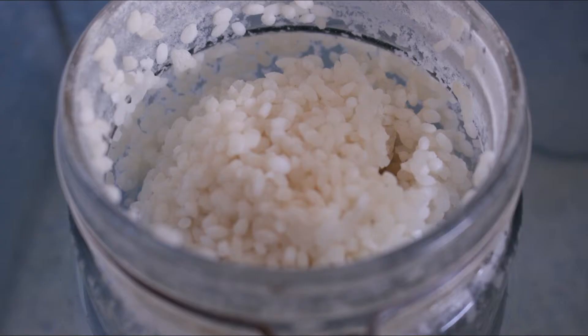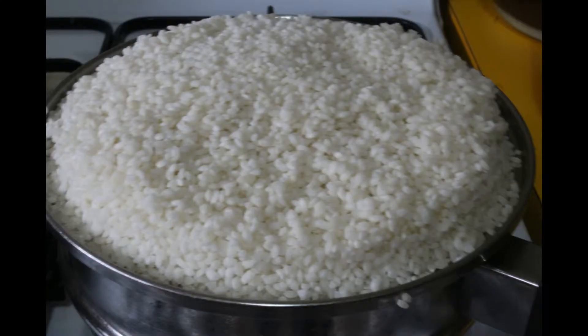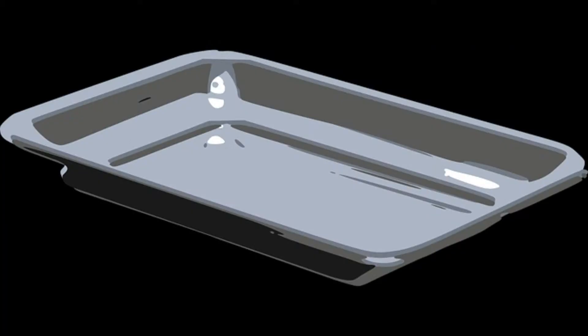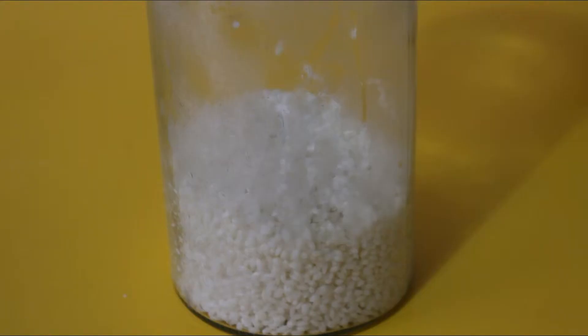In order to create koji, take rice and spread it across a solid surface like a baking tray. In this case, a large jar is used.